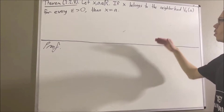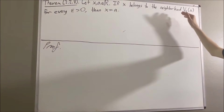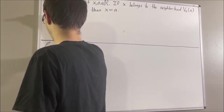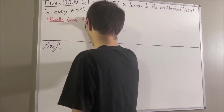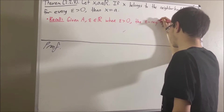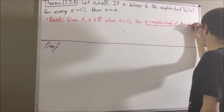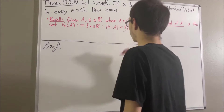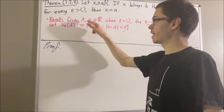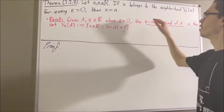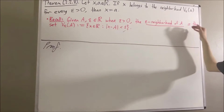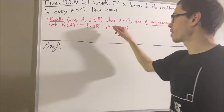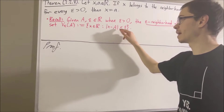First of all, what's a neighborhood? Well, if you recall, the way a neighborhood is defined can be as follows. Given two real numbers a and epsilon, where epsilon is greater than zero, we say that the epsilon neighborhood of a is this set — the set of all real numbers x that satisfy absolute value of x minus a is less than epsilon.